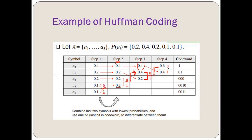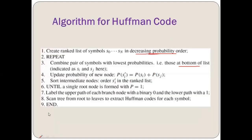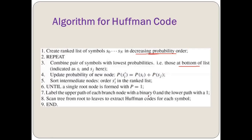Now I need to find the codewords for all symbols. The algorithm says: label the upper path of each branch node with binary 0 and the lower path with binary 1 — we have already done this. The last step says: scan the tree from root to leaves to extract the Huffman code for each symbol.